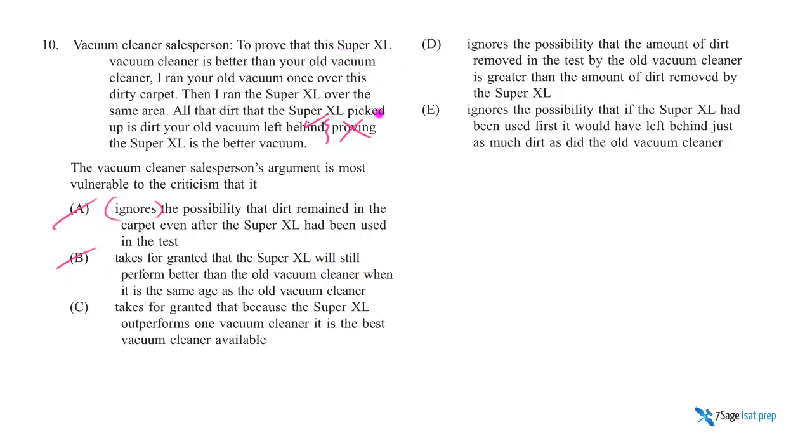Takes for granted that because the Super XL outperforms one cleaner is better than... this is just, it's to prove that the Super is better than your old vacuum. The comparison is direct. Nobody's trying to compare against all other cleaners. D and E are the attractive ones, well E being right.